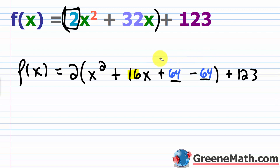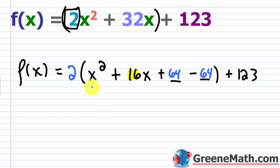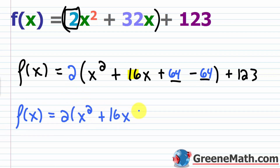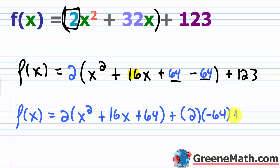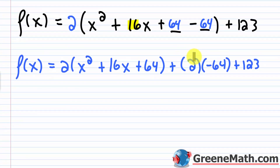This is where it gets tricky and a lot of people make mistakes. Because there's a 2 outside the parentheses, to remove the −64 from inside you must distribute the 2 to it. So you keep f(x) = 2(x² + 16x + 64) and then the −64 inside becomes 2 × (−64) = −128 outside. So f(x) = 2(x² + 16x + 64) + (−128) + 123.